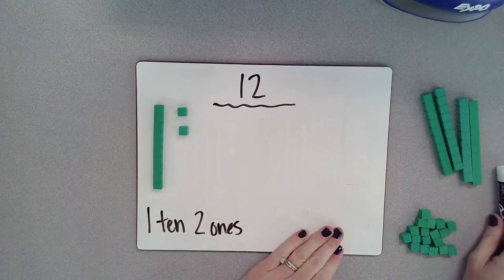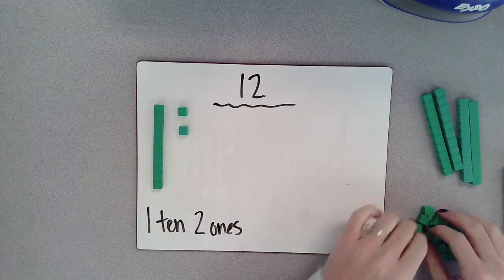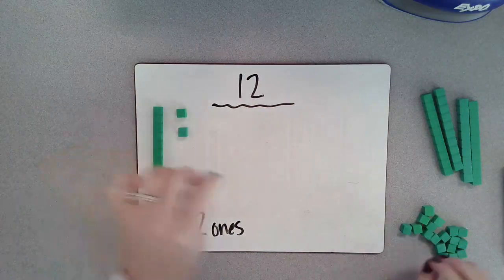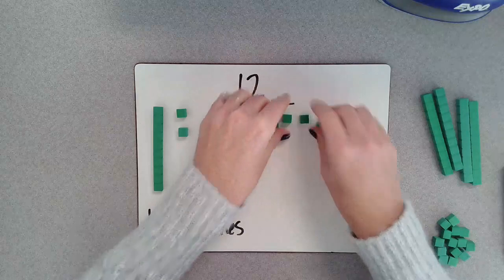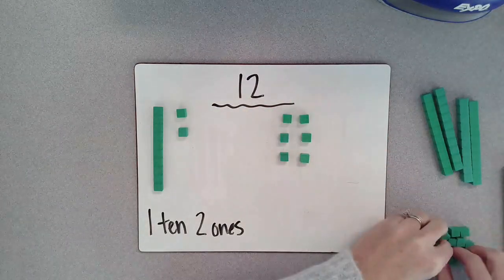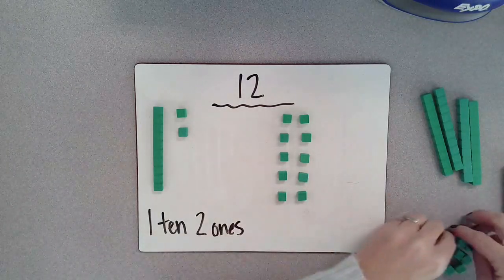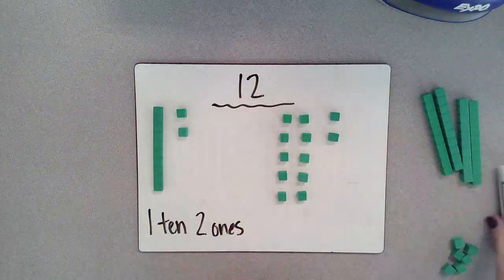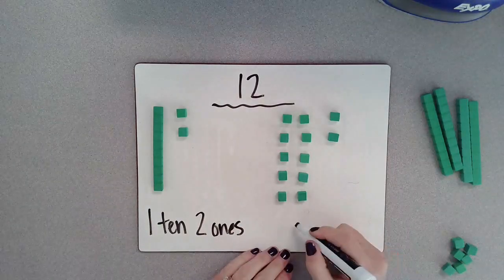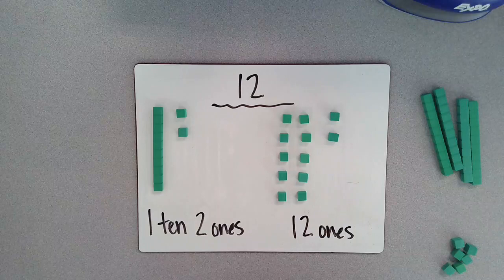Let's think about another way that we can think about the number 12. Instead of using one of these tens, we could use 10 ones. So one, two, three, four, five, six, seven, eight, nine, 10. And then of course our two ones. So we can actually just use 12 ones to create that number.